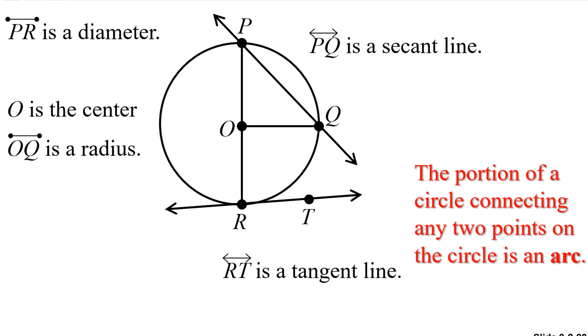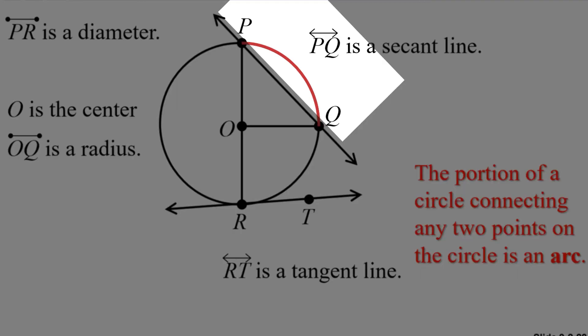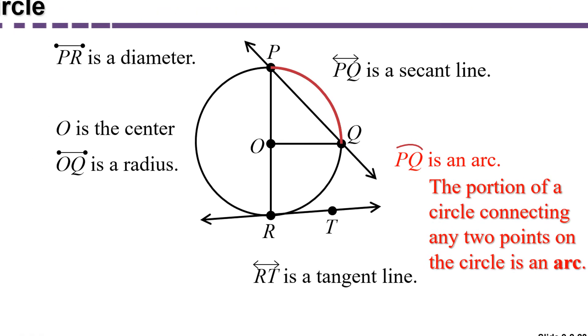Now the portion of a circle, the round outside part that connects two points, is called an arc. An example of an arc would be this portion in red between P and Q.